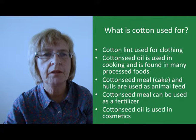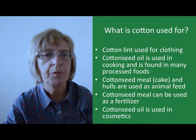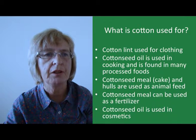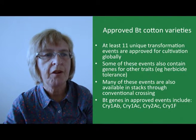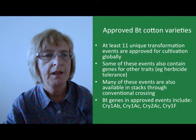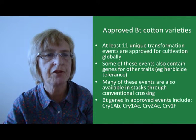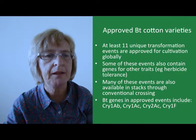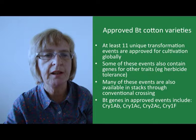Although the main use is for cotton fibre for textiles, cottonseed oil is in fact used in many processed foods such as mayonnaise and potato chips. Cottonseed cake or meal — the residue after the oil has been extracted — as well as the hulls are used in animal feeds. There are also some peripheral uses as a fertiliser or in cosmetics. There are at least 11 unique transformation events approved in various countries, some containing genes for other traits or genes other than BT for insect protection. The BT genes in approved events include Cry1AB, Cry1AC, Cry2AC and Cry1F.